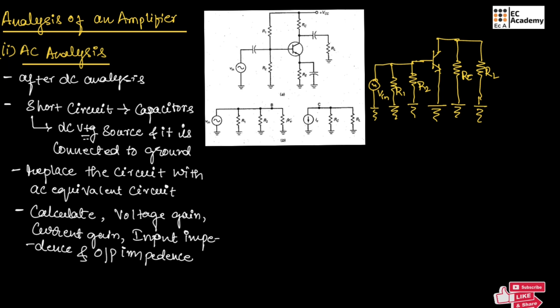Here, this part of the transistor in the AC equivalent circuit is represented by the pi-equivalent circuit. So, this part of the transistor is replaced by the pi-equivalent circuit. At the output side, we have connected the collector resistance and load resistance. At the input side, we have connected resistors R1 and R2 along with the AC voltage source.